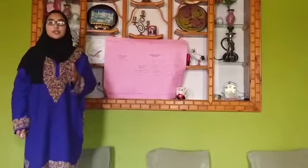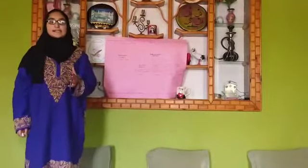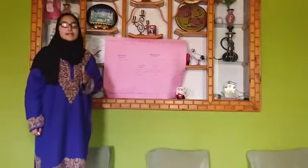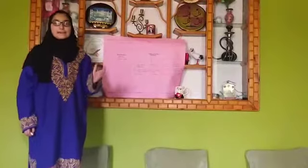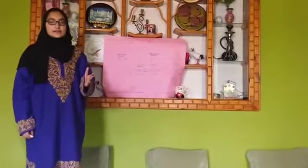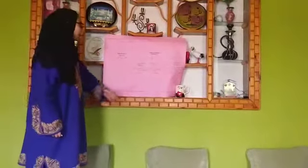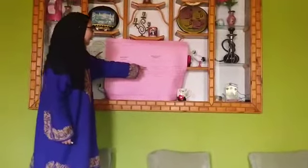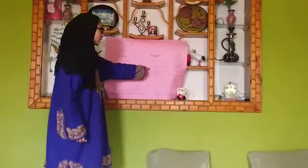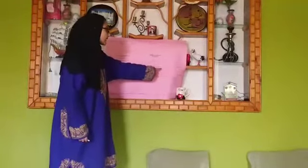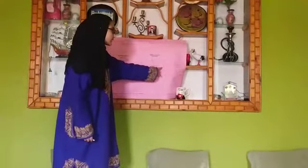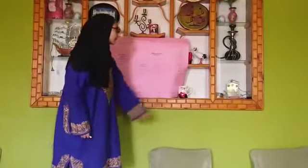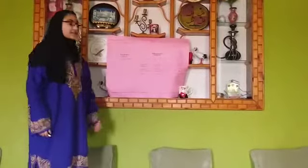Heterotrophic nutrition is further divided into many types. First one is symbiotic nutrition. Second one is saprophytic nutrition. Third one is insectivorous nutrition. And fourth one is parasitic nutrition. Now we will discuss them one by one.